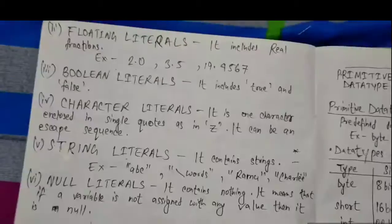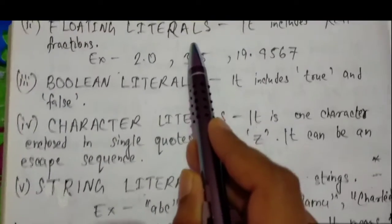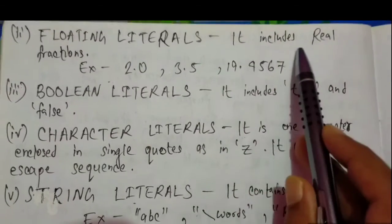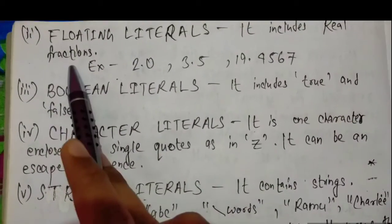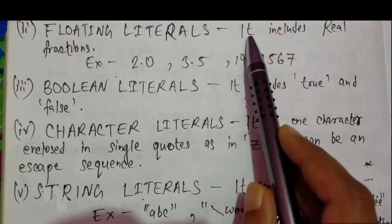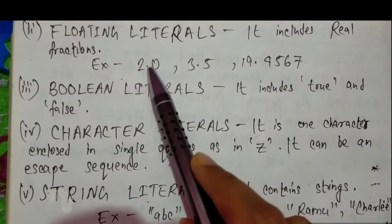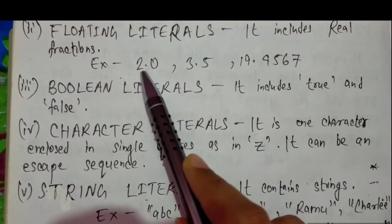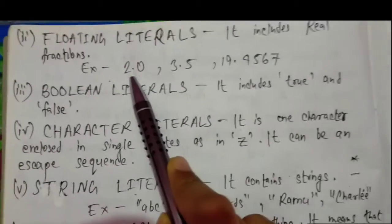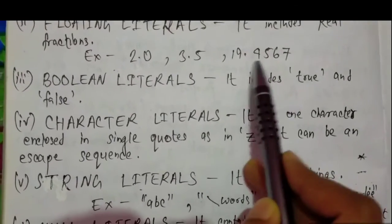Next is floating literal. It includes real fractions. That means floating literals can hold real values. If we are assigning the value 2, we have to assign it as 2.0 as it is storing fractional values like 3.5. These are the examples.